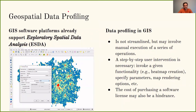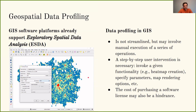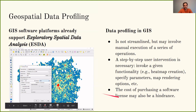Although general profiling libraries do not focus on geospatial data, many GIS software platforms already offer some profiling capabilities with support of exploratory spatial data analysis tools. However, data profiling in GIS platforms is not streamlined but may involve manual execution of a series of operations, and step-by-step user intervention is necessary. Here we see an example of creation of a heatmap in QGIS, a desktop GIS application. Although QGIS is open source, many other advanced GIS platforms require a software license, with a cost that in many cases could be prohibitive.